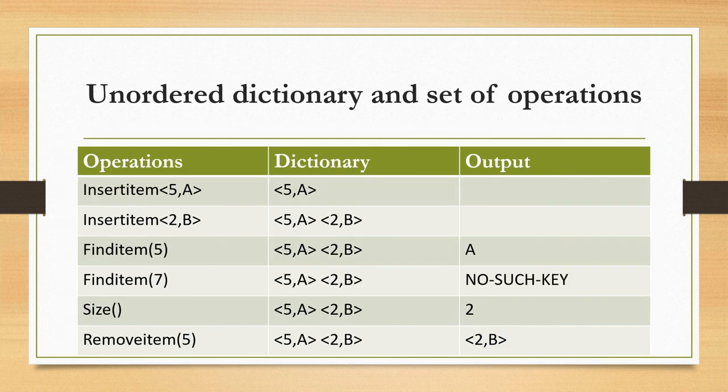Next is unordered dictionary and set of operations. Here also we have 3 columns: operations, dictionary, and output. First, insert item (5, a) — it is inserted in the dictionary. Next, insert item (2, b) — it is also inserted. As this is the unordered dictionary, the elements are not arranged in an ordered manner. Next, find item of key 5 — since we inserted (5, a), the output will be a.